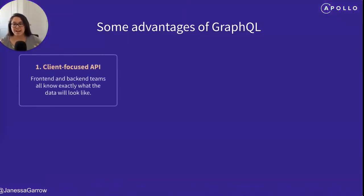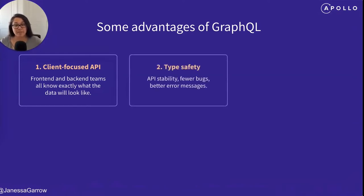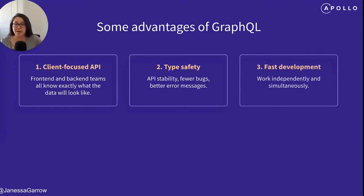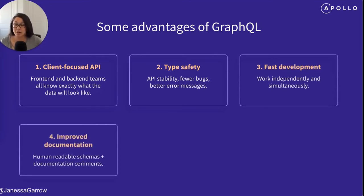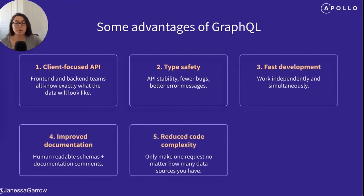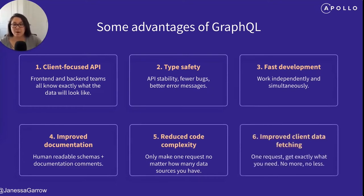First, a client-focused API. Front-end and back-end teams all know exactly what the data will look like. Second, type safety, API stability, fewer bugs, better error messages. Faster development, work independently and simultaneously with other teams. Fourth, improved documentation, human-readable schemas and documentation comments. Fifth, reduced code complexity, only make one request no matter how many data sources you have. And finally, improved data fetching. Make one request, get exactly what you need, no more, no less.